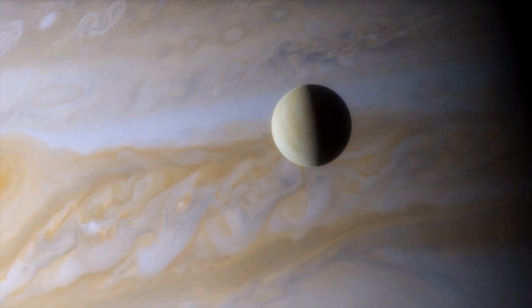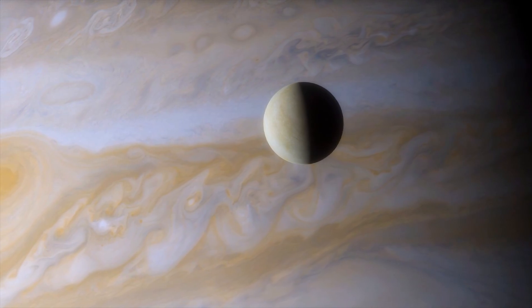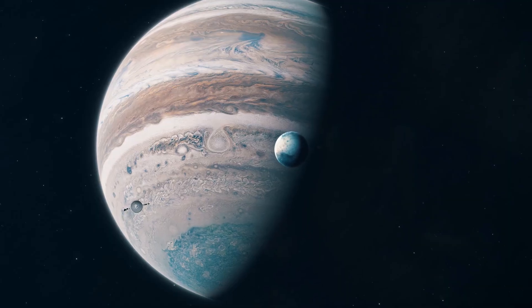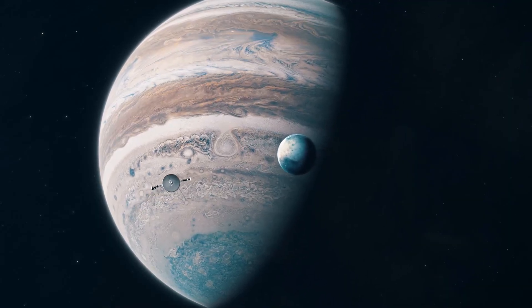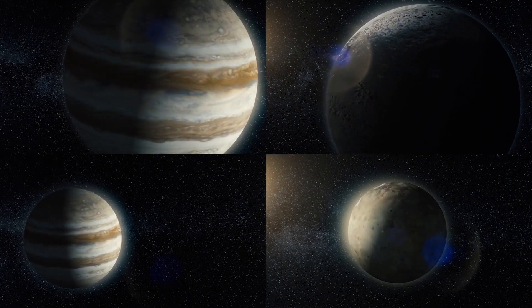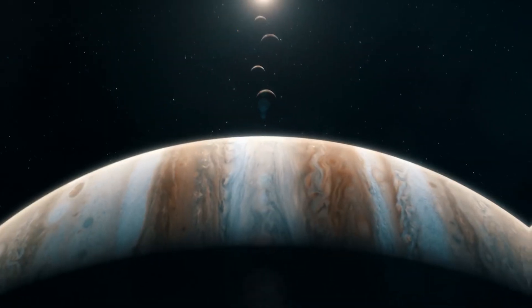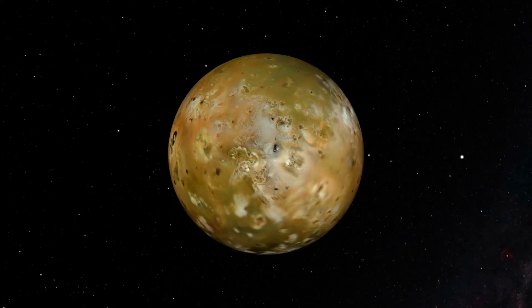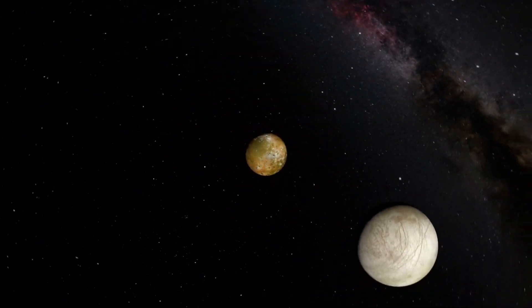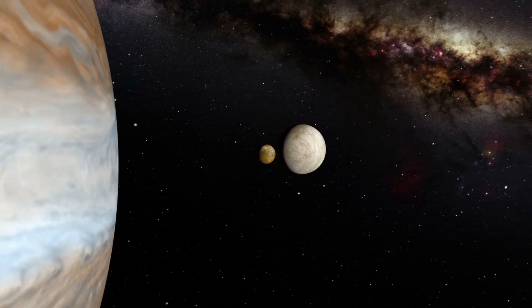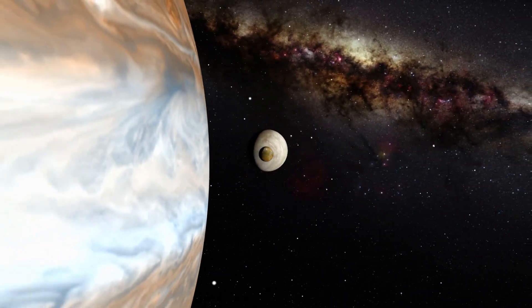Another interesting subject to research is Jupiter's rings. Jupiter's rings exhibit distinctive features, even if they are not as noticeable as Saturn's. Additional comprehension of Jupiter's intricate system can be attained by looking at their makeup, how they formed, and how they interact with the planet's magnetic field.